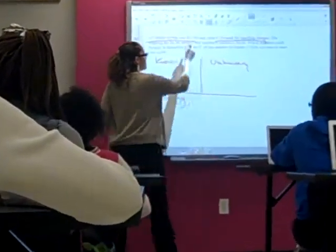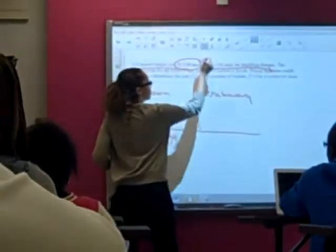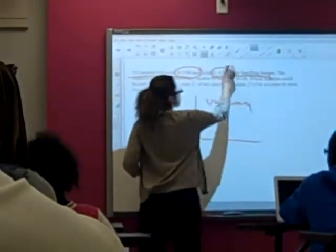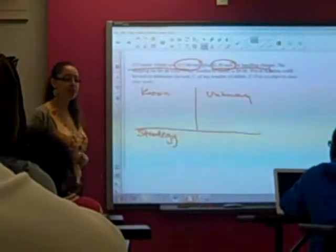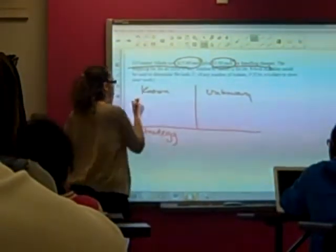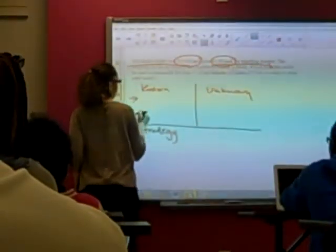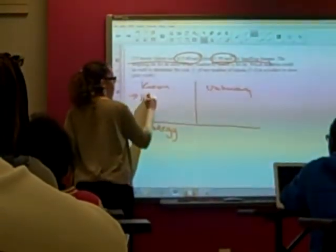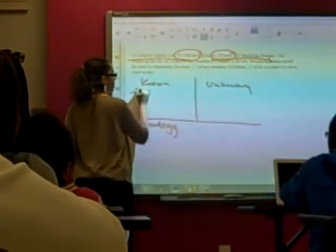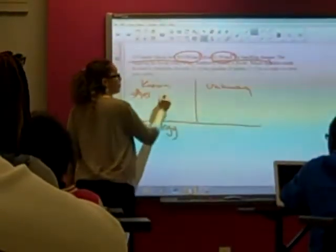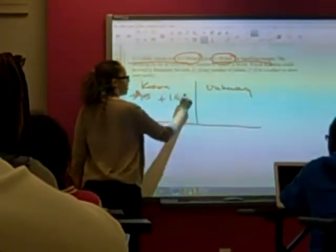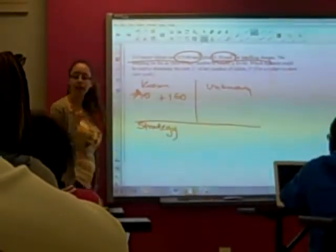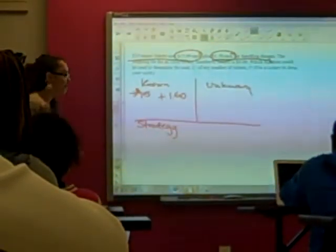For each ticket — these say 'each' — so that indicates that per ticket, I'm paying how much? I'm paying $15, right, and then plus $150. So we want to keep that in mind.